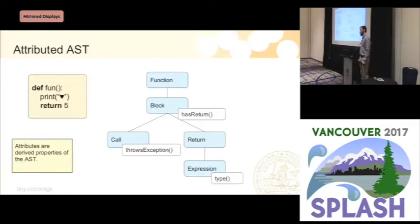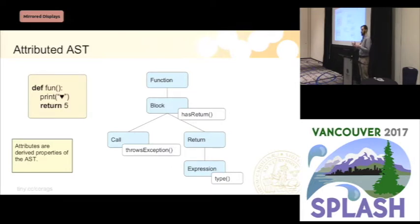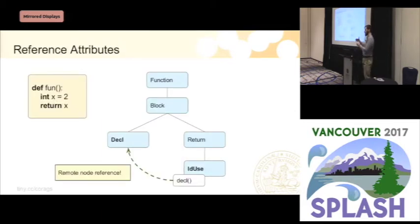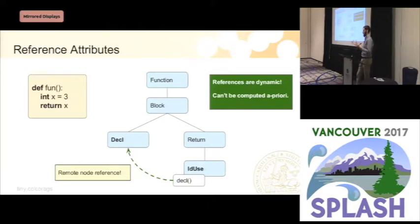Attributes are used for computing static properties about your program. For example, in a Python-like language with a block, we could compute things like whether it has a return statement, or compute the type of an expression. We have reference attributes that add references to other nodes in the abstract syntax tree — for instance, given a variable use, the attribute gives us the declaration node. References are computed dynamically, so we cannot know before executing where the reference will point, meaning all evaluation of reference attributes needs to be dynamic.